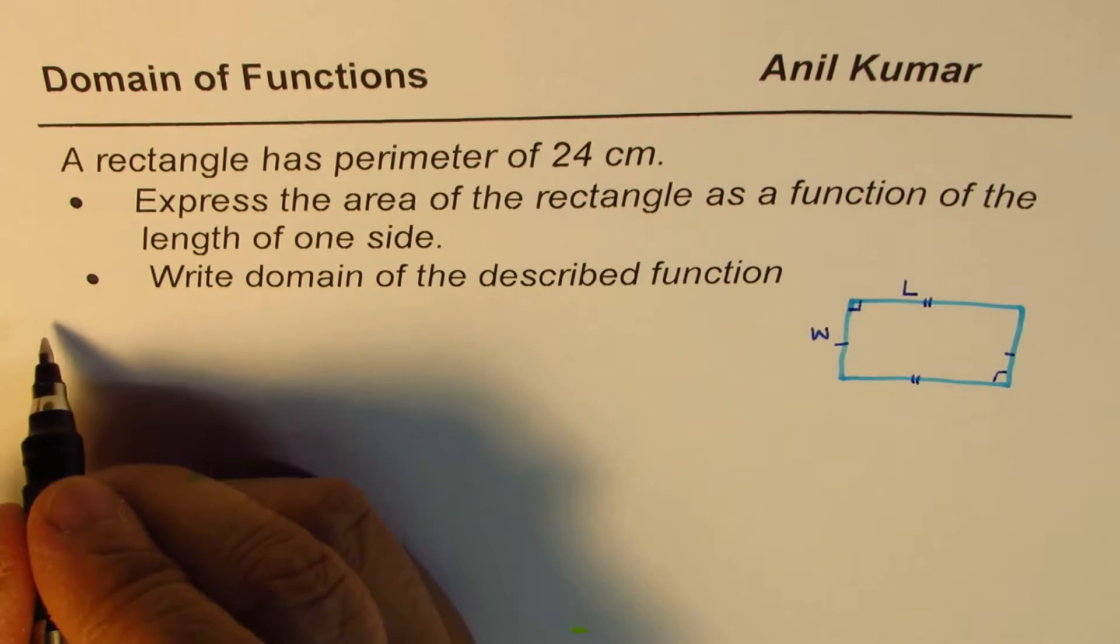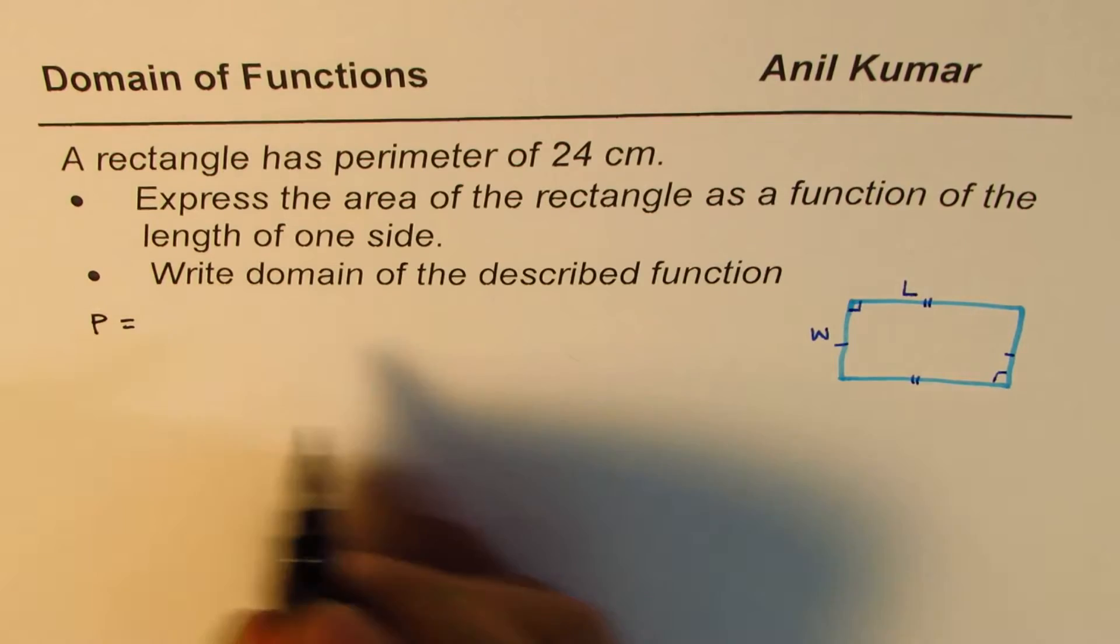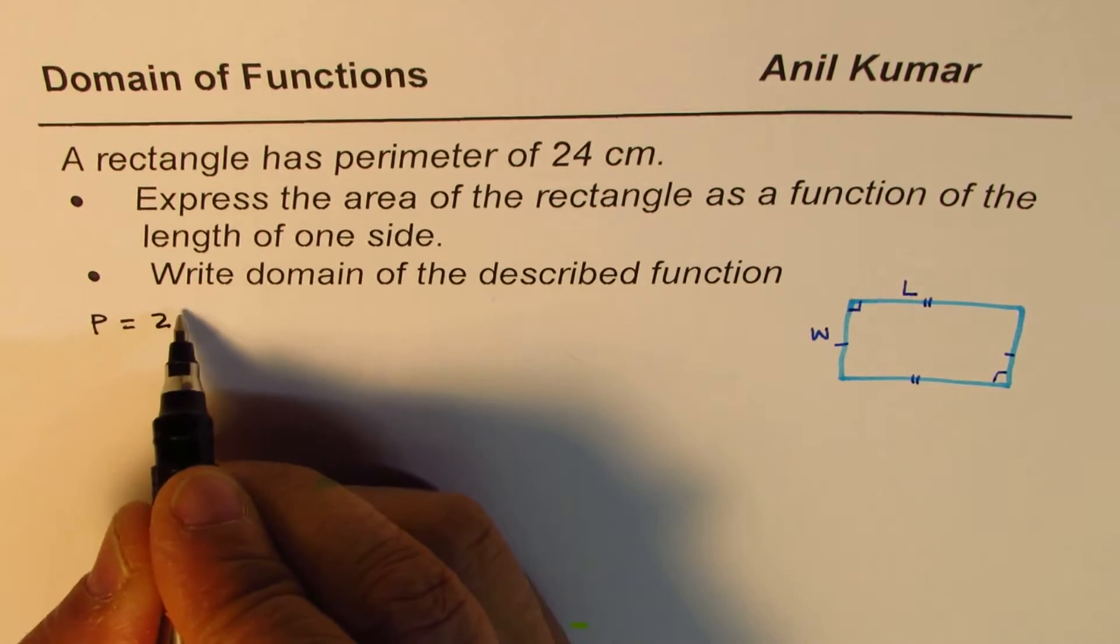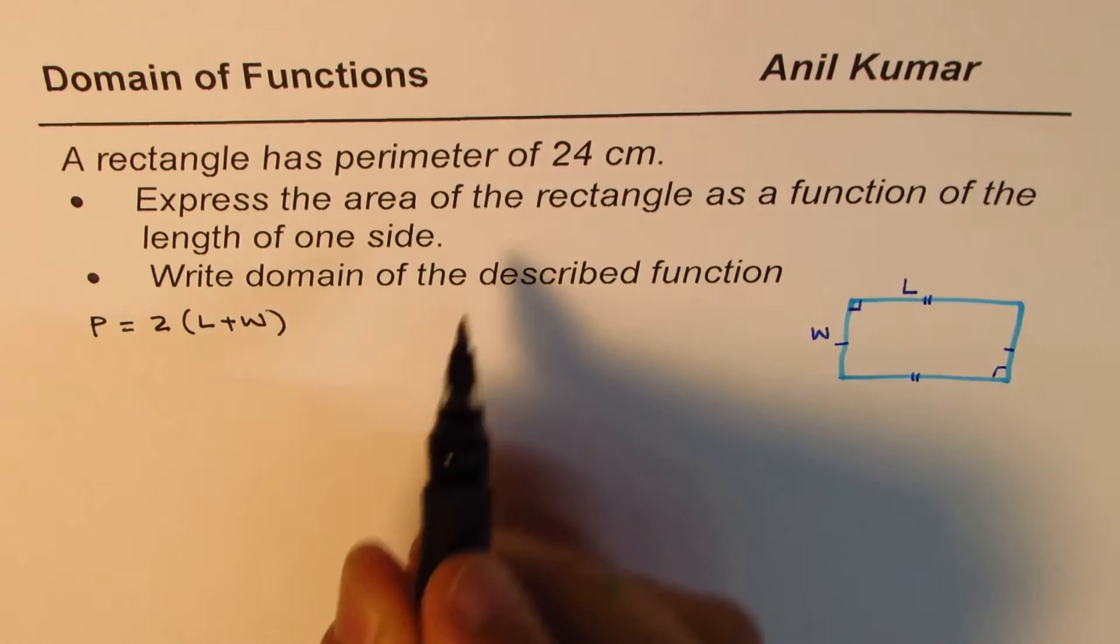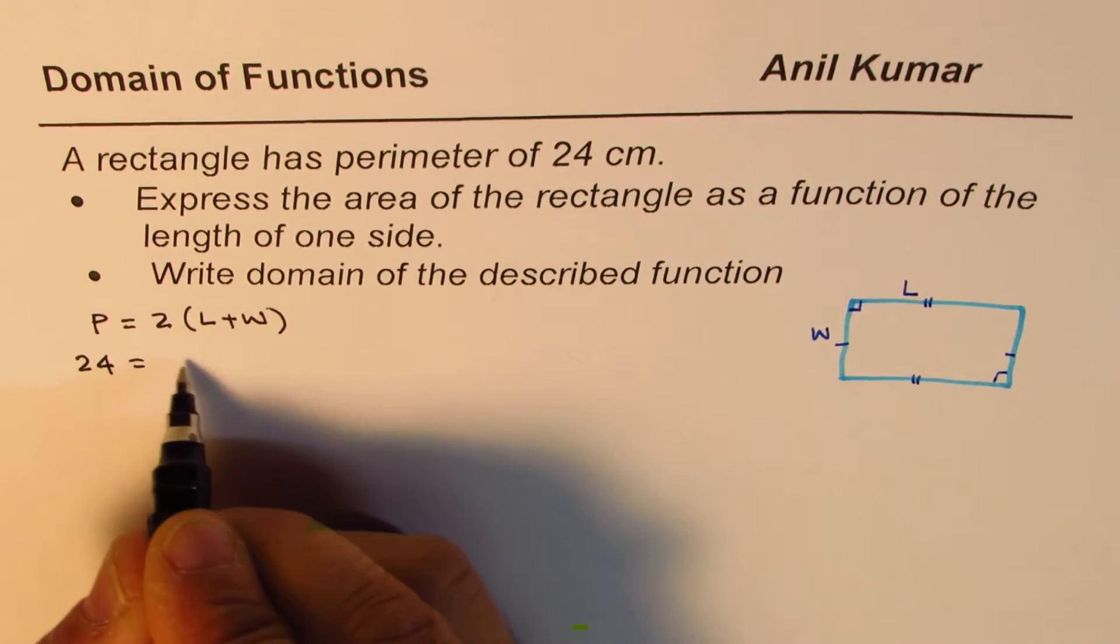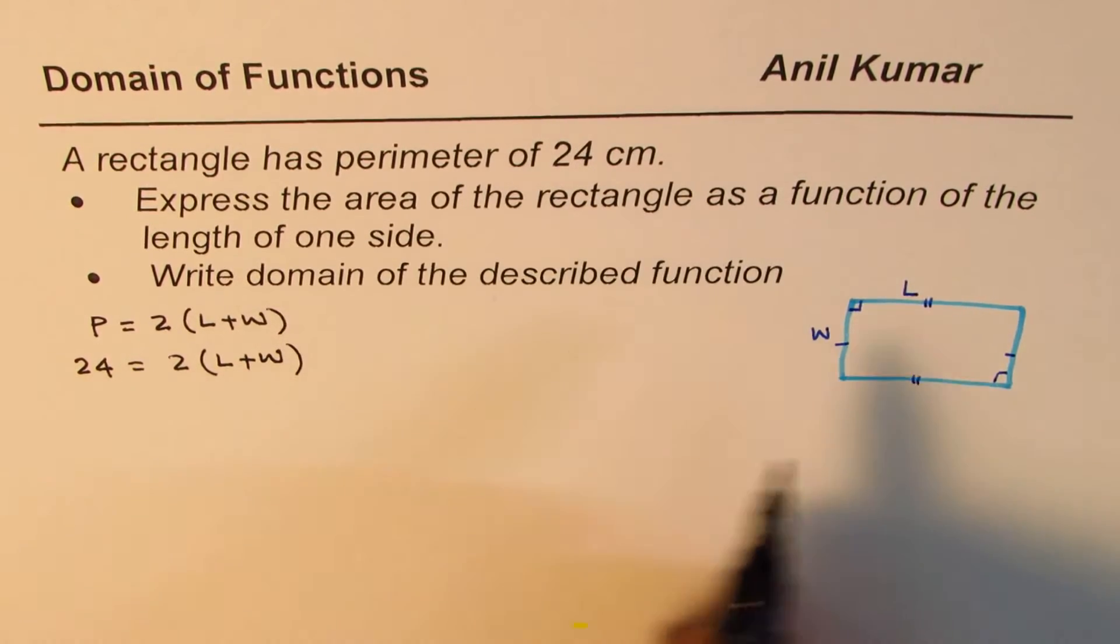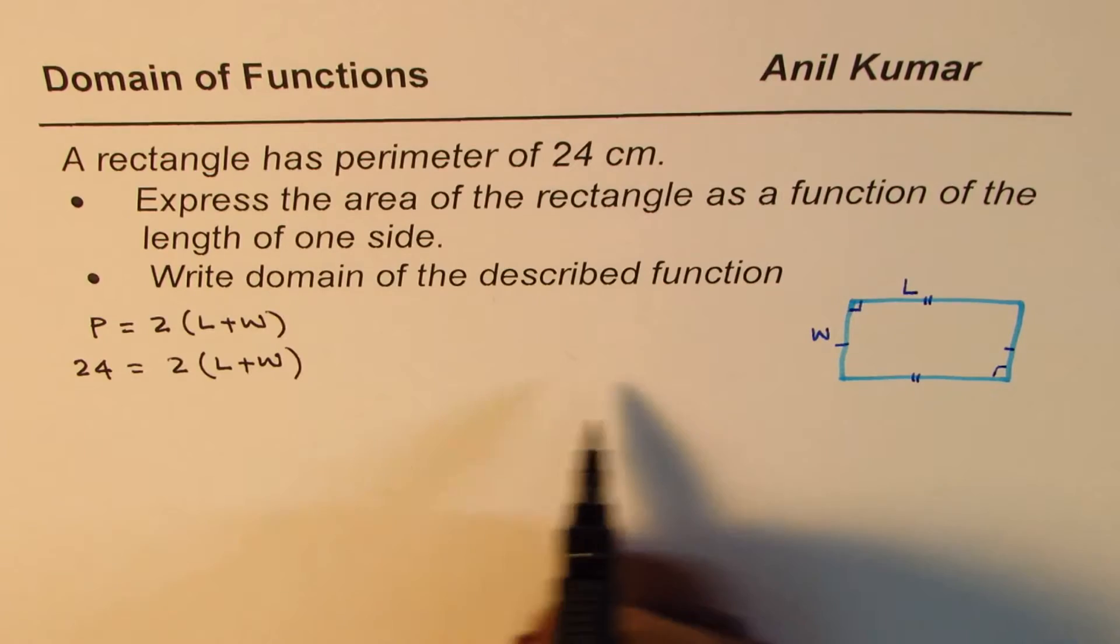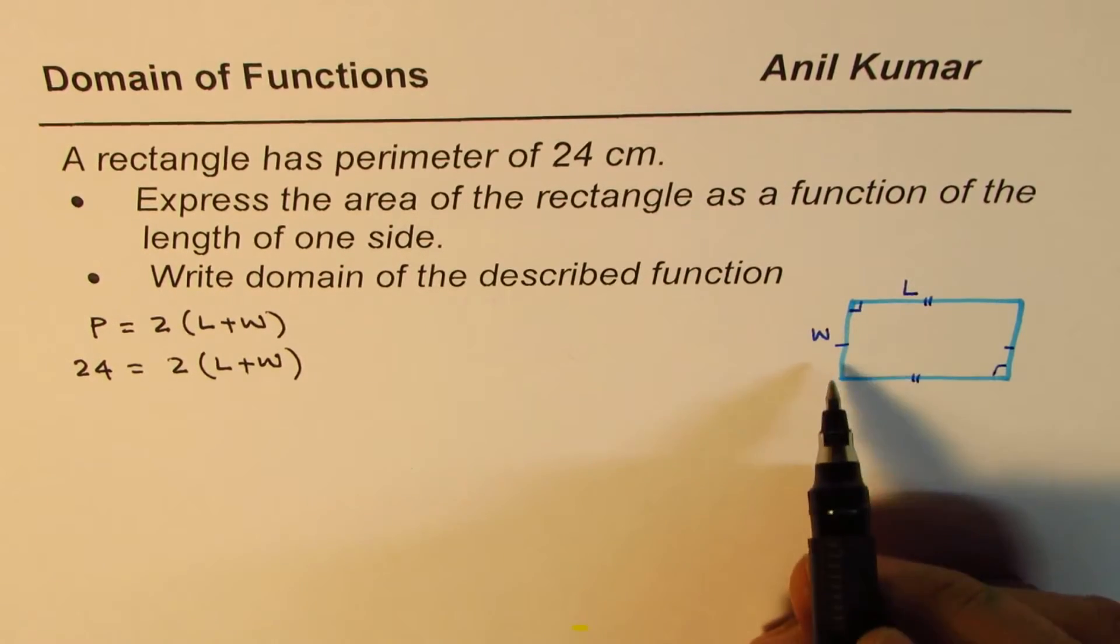What we are given here is perimeter, which is sum of all sides. So perimeter, which is 2 times length plus W, is given to us. The value is 24. So 24 is equal to 2 times length plus W, where we have defined our variable L is length, W is width.